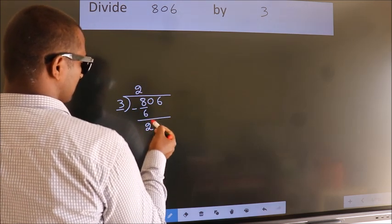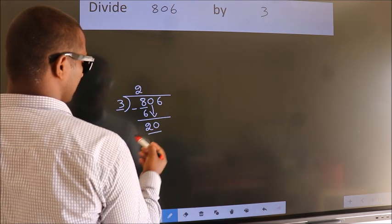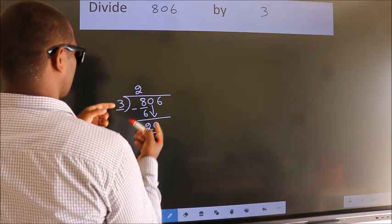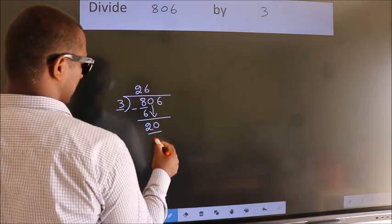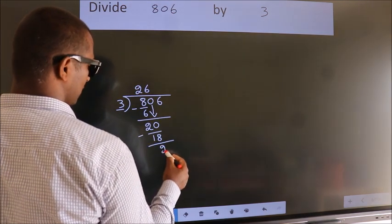After this, bring down the beside number. So 0 down. So 20. A number close to 20 in 3 table is 3 times 6, 18. Now we subtract. We get 2.